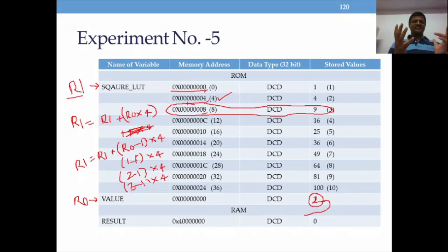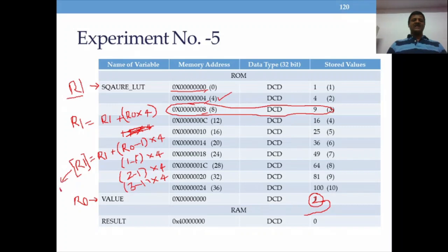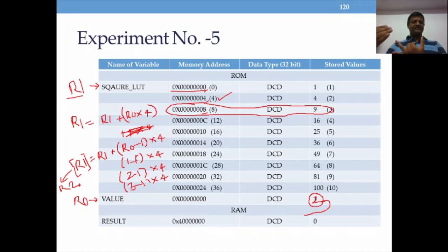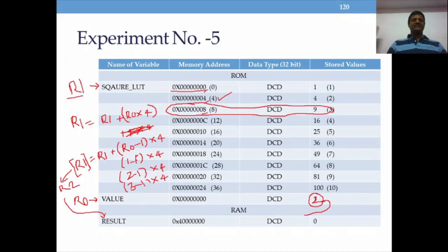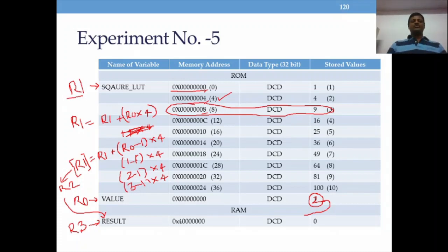After computing the exact memory address in R1, we use that addressing mode — placing R1 in square brackets — to copy the value to register R2. So R0 holds the input value, R1 holds the address of the corresponding square in the LUT, R2 receives the square of the given number, and R3 will hold the address of the result variable. We use a LOAD instruction to get the LUT value into R2, and a STORE instruction to write it to the result variable.